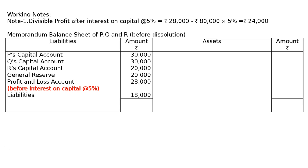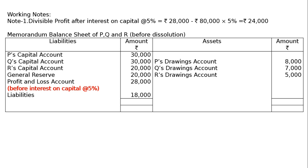Liabilities are Rs. 18,000. On the asset side, drawings: P's drawings Rs. 8,000, Q's drawings Rs. 7,000, R's drawings Rs. 5,000. Totalling the liabilities side gives Rs. 1,46,000. Taking that to the asset side, the sundry assets as a balancing figure are Rs. 1,26,000.